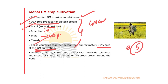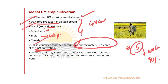USA, Brazil, Argentina, India, and Canada are all giving major emphasis to GM crop production — almost 90% of the area under GMO cultivation comes from these five countries. Common GM varieties grown worldwide include soybean, maize, cotton, and canola, all with herbicide tolerance and insect tolerance — particularly GM soybean, GM maize, and Bt cotton.